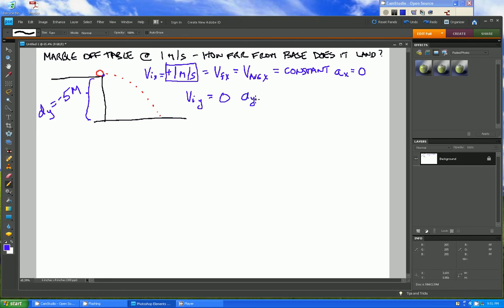However, the acceleration in the y direction once it leaves the edge of the table is equal to g, which is equal to negative 9.8 meters per second squared. What else do we know? Well, we should label that the distance we're looking for is this d in the x direction, this displacement in the x direction.